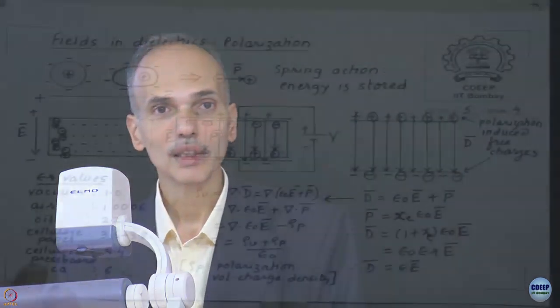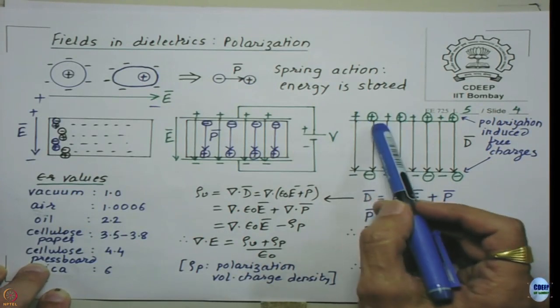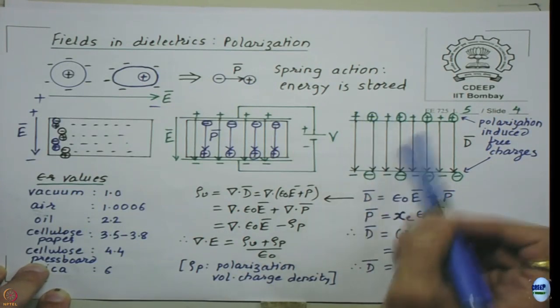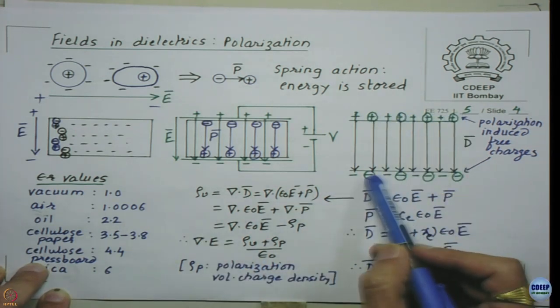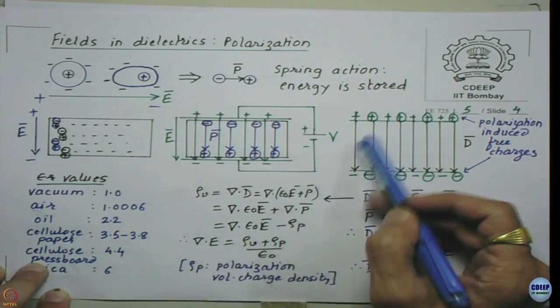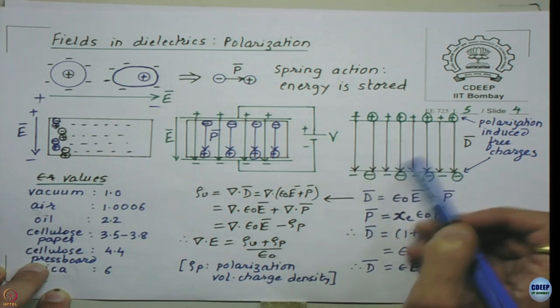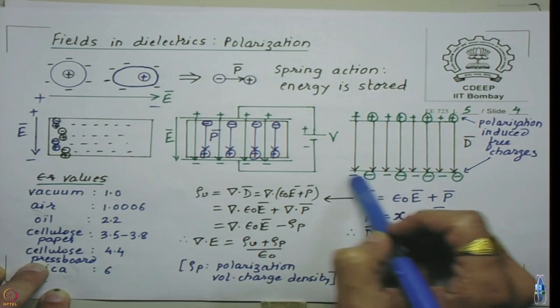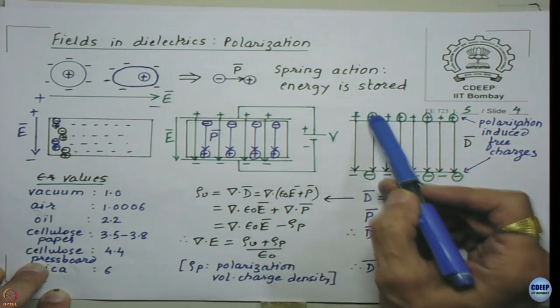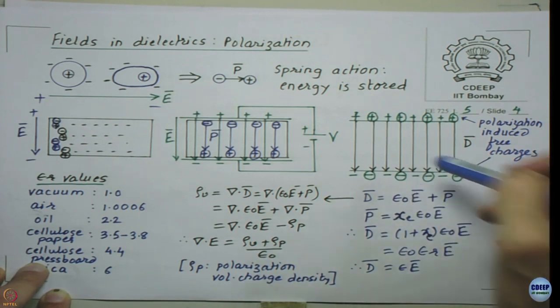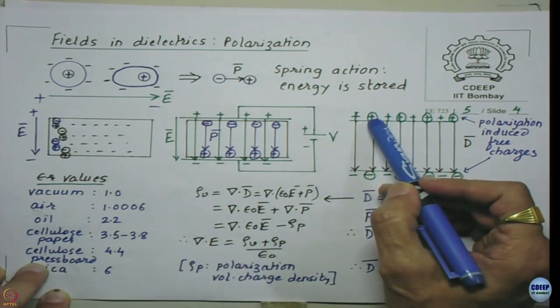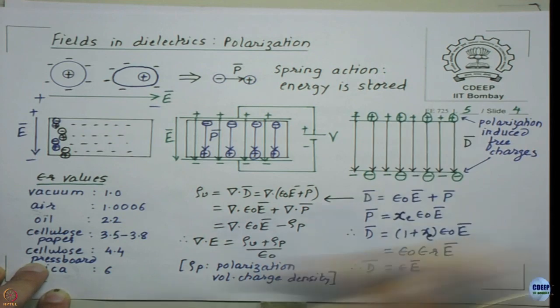Welcome to the 6th lecture of this course. Before starting, I want to address questions from the end of Lecture 5 about polarization phenomena. When we replaced the dielectric with additional induced positive and negative charges, we effectively eliminated the need to consider the polarization vector. All those effects are now implicit in those additional charges, so we do not need to bring in the polarization P vector anymore.